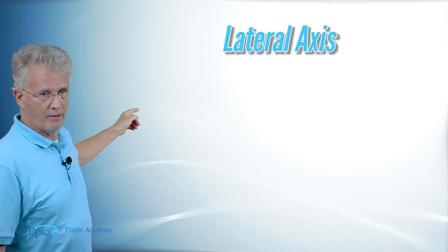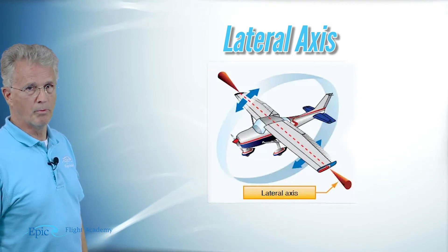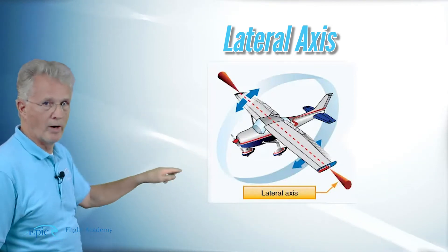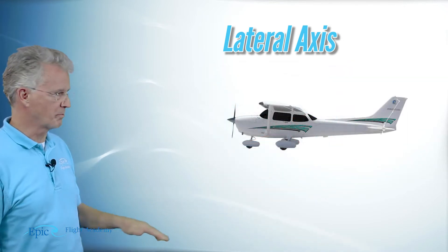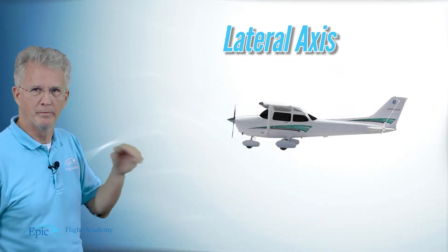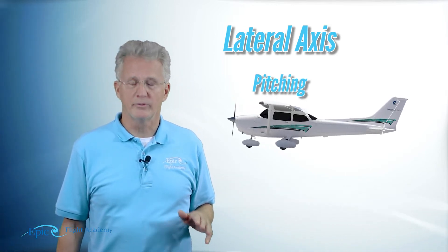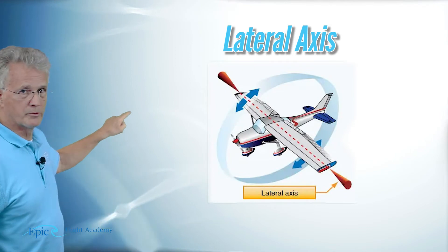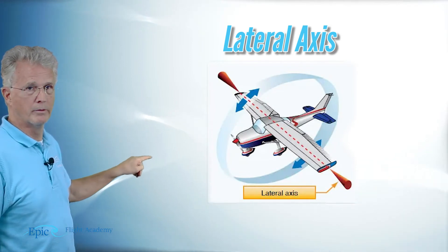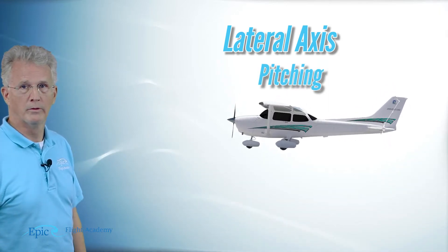Let's start with the lateral axis. The lateral axis of the airplane moves from wingtip to wingtip. Movement around that lateral axis is a fore and aft movement, or from the pilot's perspective, it's like an up and down movement. Pilots call that a pitching movement, and that movement is controlled by the elevators. So lateral axis — wingtip to wingtip — the movement is pitching, and the flight control is the elevator.